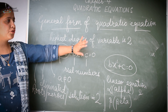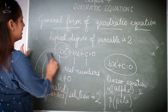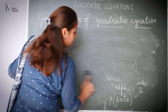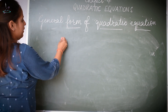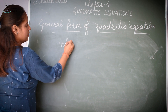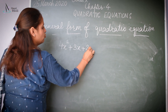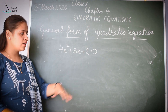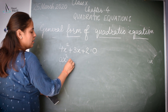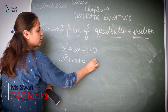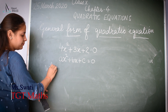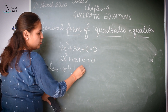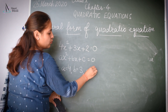So this was all about the general form of quadratic equation. Let us take an example. If I say 4X² + 3X + 2 = 0, this is a quadratic equation as it is of the form AX² + BX + C = 0, where, comparing the two equations, A = 4, B = 3, and C = 2.